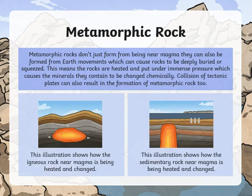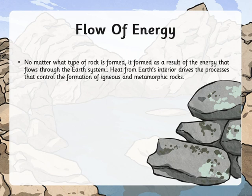As for metamorphic rocks — from the name 'metamorphic' — the rock changes its shape or form from one to another due to high temperature and pressure. These are the two factors that cause the change in rock shape or form. We are also going to be discussing how energy flows in these processes. Igneous, metamorphic, and sedimentary rocks all involve a flow of energy, allowing us to see the different rock types.